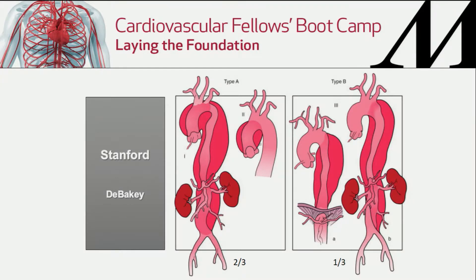We can have a type A dissection and a type B dissection. Two-thirds of them are type A, a third are type B. Stanford and DeBakey classifications: Stanford A is proximal, B is distal. DeBakey type 1 is essentially from the ascending aorta all the way down — that's the most common. Type 2 is isolated, involving just the ascending. Both are surgical emergencies in the vast majority of cases; those patients need an operation.